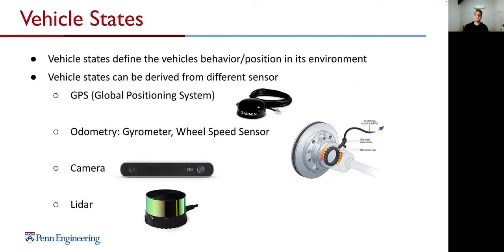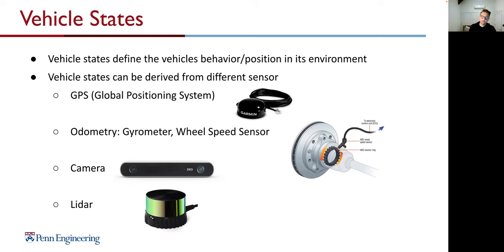What we want to define in this lecture are the so-called vehicle states. A vehicle state helps us define a vehicle's behavior, position, or specific state in its environment. We use vehicle sensors to derive vehicle states — for example, GPS for global position, odometry like a gyroscope or wheel speed sensors, or optical sensors like a camera or LiDAR. Sometimes sensors output these states directly; sometimes we need special algorithms to derive them.